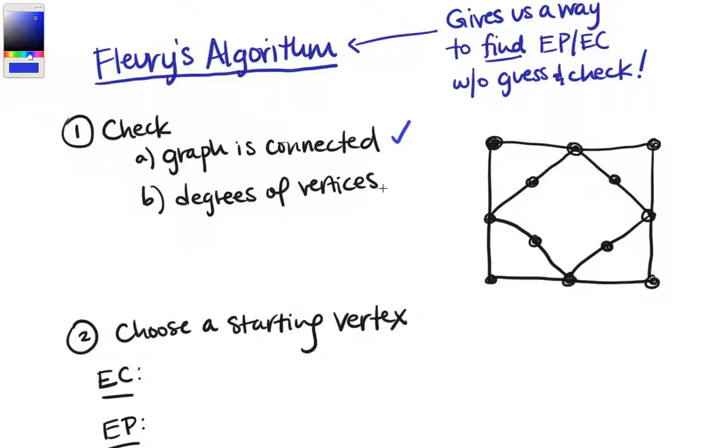And we're going to check the degrees of the vertices. So we see that all of the corners have two, and all of these ones in the middle of the sides have one, two, three, four edges going into them. And all of these on the interior, each of those has two edges. So our vertices are all even, which means that we have an Euler circuit in this particular graph.